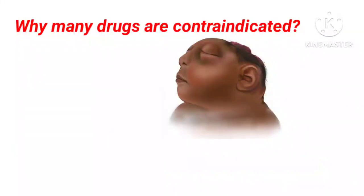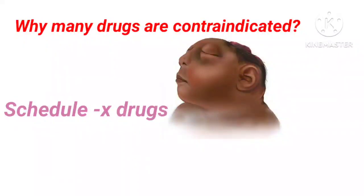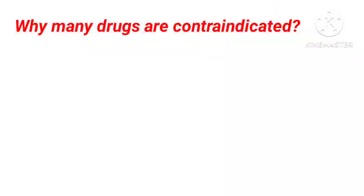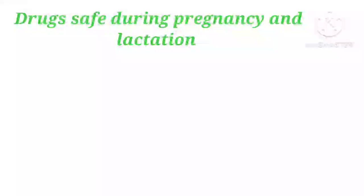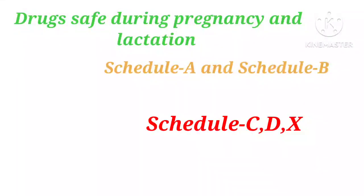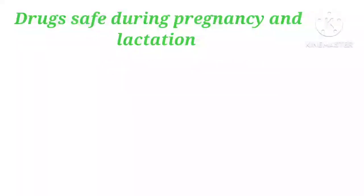We have studied these effects in animals and some patients, and schedule X drugs have shown many abnormalities in humans. That is the major reason we do not give schedule X, C, and D drugs to pregnant ladies and also to lactating women. Now let's discuss what schedule A, B, C, D, and X mean. Schedule A and B drugs are safe to give to pregnant and lactating mothers.